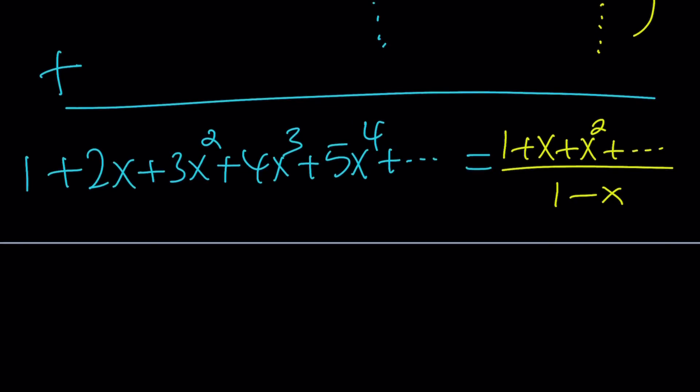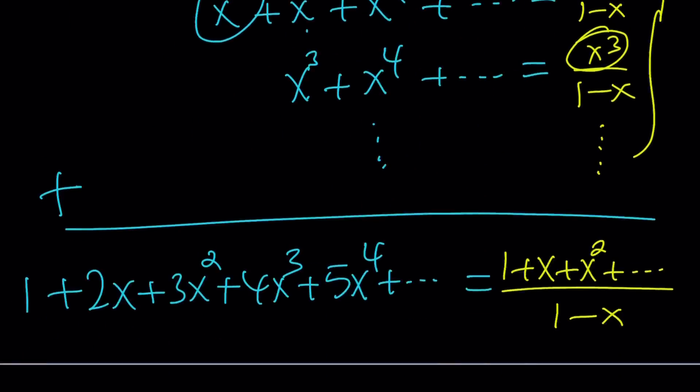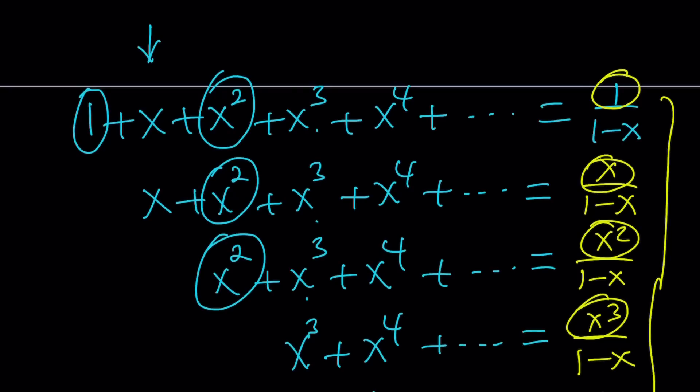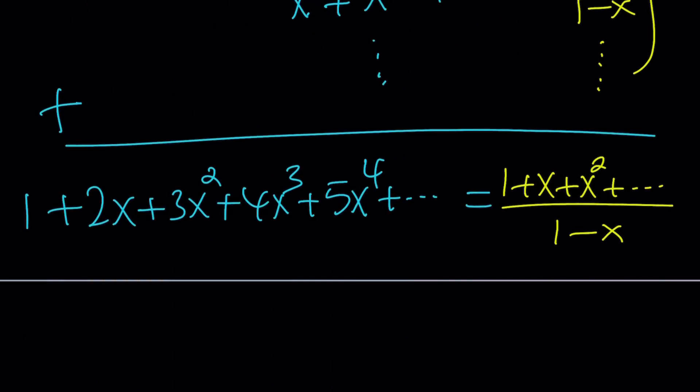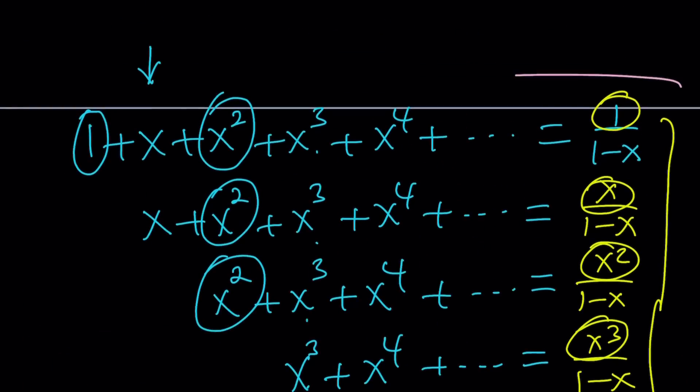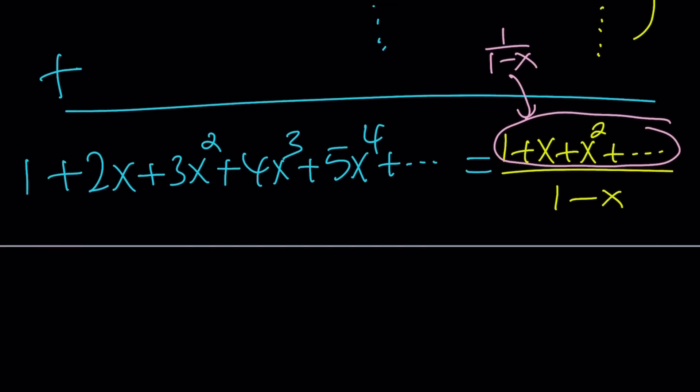But guess what? We can simplify this further. Why? Because look at the numerator. Isn't that familiar? What? It's like, it's the first sum. Yes. So, this is 1 over 1 minus x. Wow. Isn't that amazing? This expression kind of contains itself. So, this is 1 over 1 minus x. We know that from the first sum right here, right? This is the first one. And we're going to have to divide it by 1 minus x.